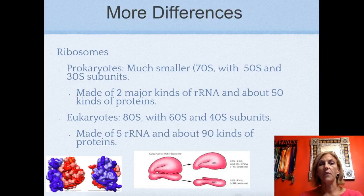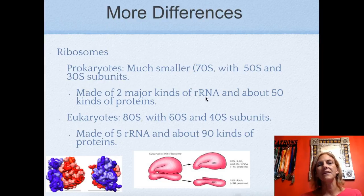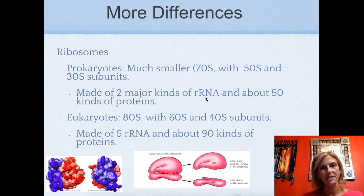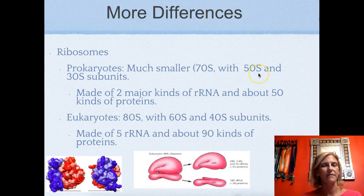Here's another difference: the ribosomes of the two types of cells. The prokaryotic ribosome is a bit smaller, which makes sense because they're smaller organisms. The prokaryotic cell has a 70S ribosome — that 'S' refers to sedimentation, so it's more a measurement of sedimentation than direct size. There are two subunits: a 50S and a 30S subunit.